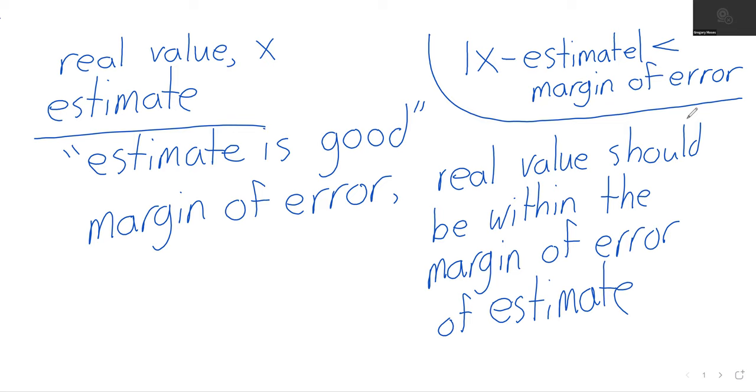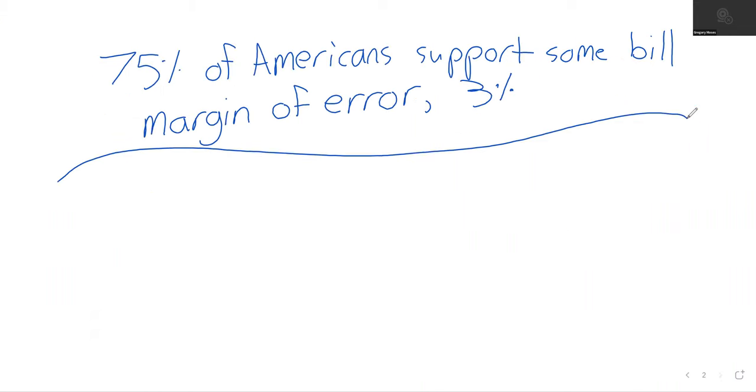The absolute value of x minus the estimate is less than the margin of error. So if x is the real percentage, then in this particular case, |x - 75| < 3 is how you would express this as an absolute value inequality.